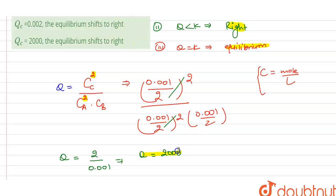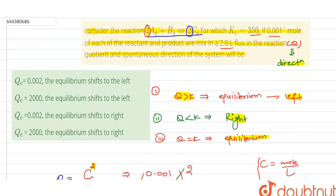So now on comparing the value of Q with the Kc, we know that the value of Q is 2000, which is greater than the K which is 350. So from here we can easily say that the reaction will tend towards the left.